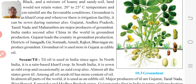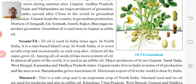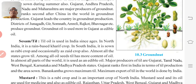Now next, sesame or teal. Teal oil has been used in India since ages. In North India it is a rain-based Kharif crop. In South India it is grown as a Rabi crop and occasionally as a Zaid crop as well. Almost all states grow teal, and among oil seeds, teal has more content of oil.